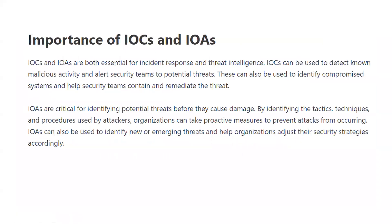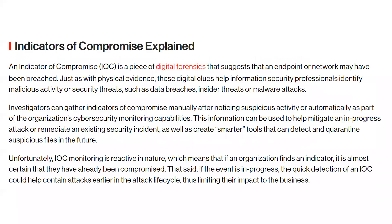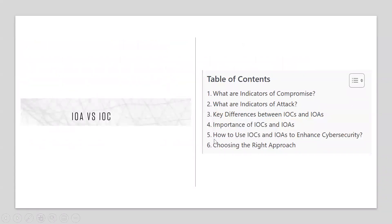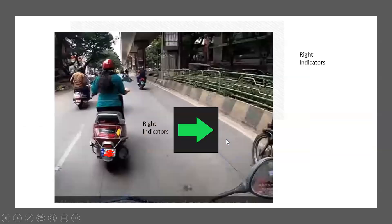There is also an article here on the importance of IOC and IOA, covering the key differences, importance, and how to use IOC and IOA to enhance your cybersecurity. You can use IOCs in your network security tools like a firewall — for example, by creating rules based on hash values. If you have a known IOC and want to block an attacker trying to access your network, you can use that IOC to block them completely.